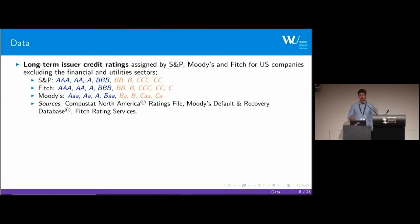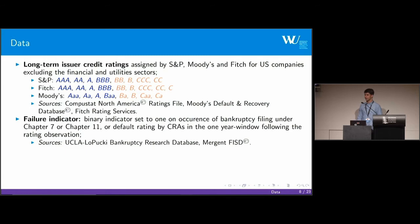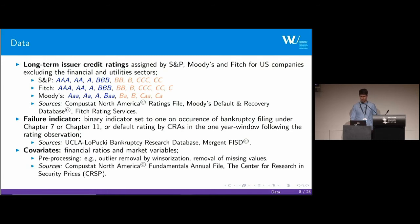Now I will quickly introduce our data. We have long-term issuer credit ratings from Standard & Poor's, Moody's, and Fitch for U.S. companies. Then we have a failure indicator, and as covariates we have financial and market variables. The timeframe we consider is 1999 until 2013.